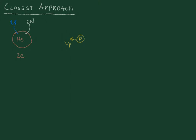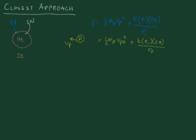Let's look at the energy for this system. Initially we have one-half the mass of the proton times the velocity of the proton squared, plus k times the charge of the proton (e) times the charge of the helium atom (2e) divided by the initial distance between them. That equals the final energy: one-half mass of the proton times the final velocity squared, plus k times e times 2e over r_final.